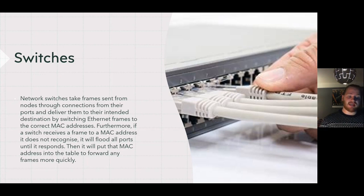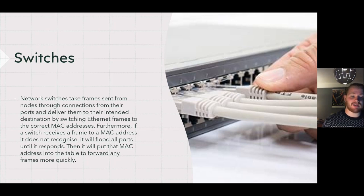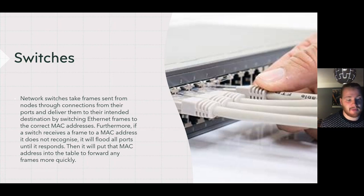Network switches take frames sent from nodes through their ports and deliver them to their intended destinations by switching ethernet frames to the correct MAC address. If a switch receives a frame for a MAC address it does not recognize, it floods all ports until it gets a response. It will then put the MAC address into the table and forward frames more quickly.